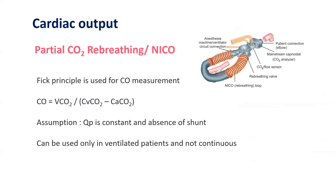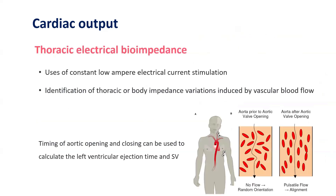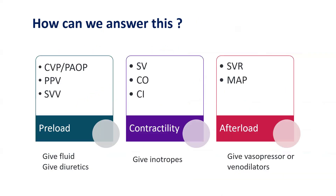Partial CO2 rebreathing — or NICO — uses the Fick principle for measuring cardiac output, but can only be used in ventilated patients and cannot be done continuously. Thoracic electrical bioimpedance uses a constant low-voltage electrical current and identifies thoracic impedance variation induced by vascular blood flow. We have now highlighted the various modalities that help us answer these monitoring questions.